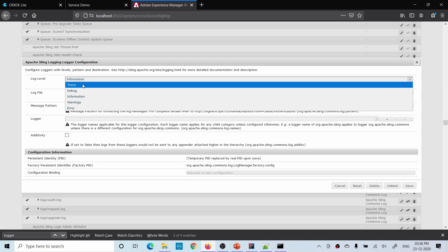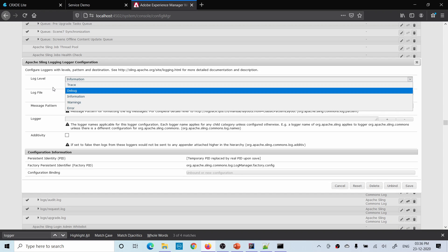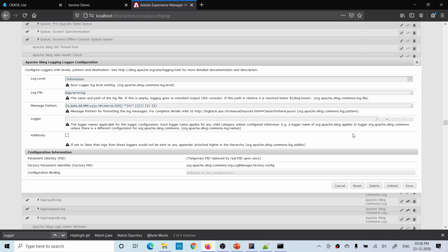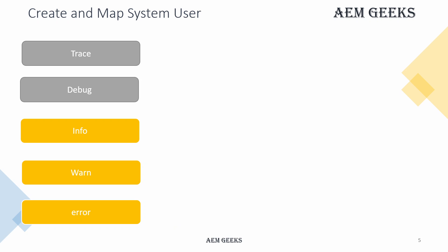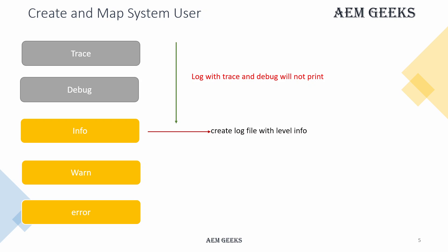You will see five options in the dropdown: trace, debug, info, warning, and error. Let's understand the order — it goes top to bottom. If you define a log file with trace level, all log statements written using debug, info, warning, and error will also be printed. But if you define a log file with info level, the upper ones — trace and debug — will not print. Only info, warning, and error will be printed. This hierarchy is important when creating a log file.